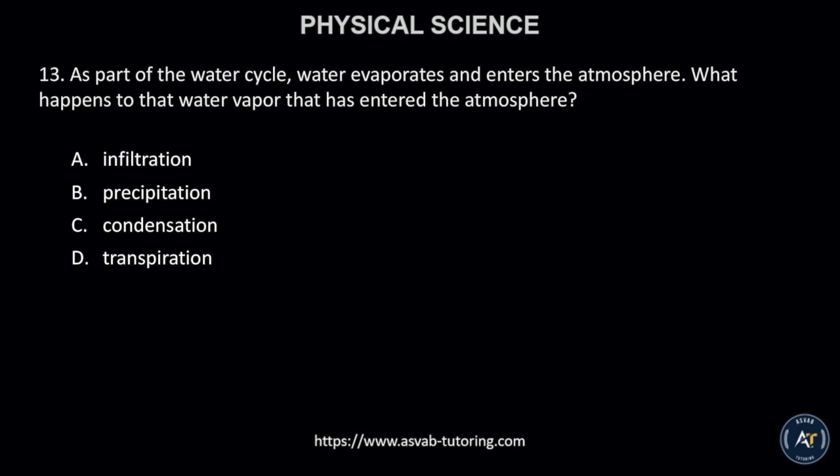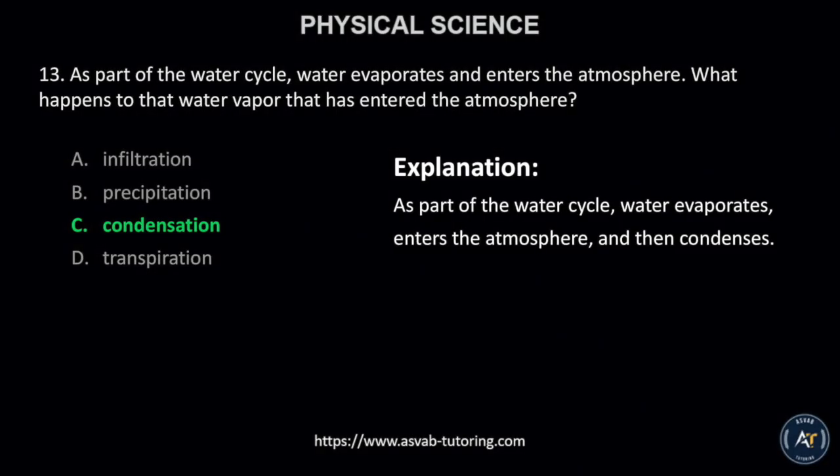Number 13. As part of the water cycle, water evaporates and enters the atmosphere. What happens to that water vapor that has entered the atmosphere? A. Infiltration, B. Precipitation, C. Condensation, or D. Transpiration. The correct answer is C. Condensation.